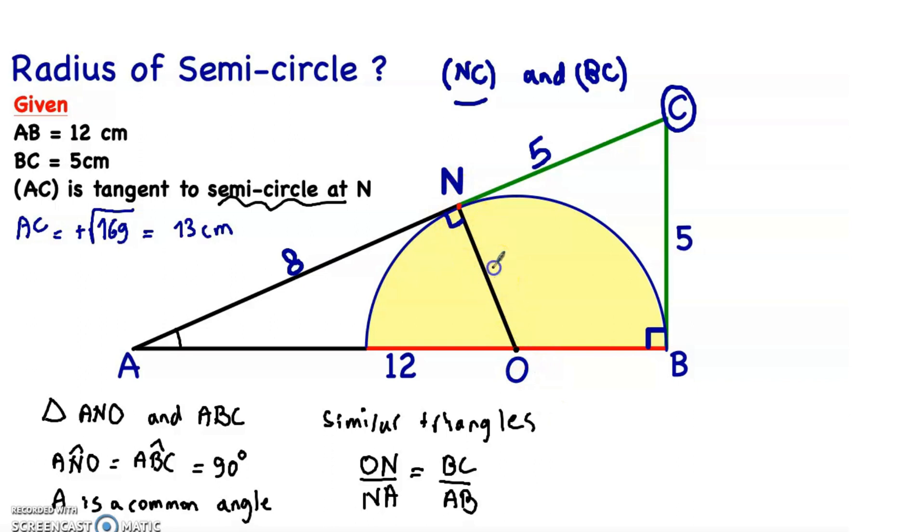So ON over NA, which is 8, equals BC, which is 5, over AB, which is 12. Now cross multiply: 12 times ON equals 8 times 5, which is 40. Dividing by 12, we get ON equals 40 over 12.